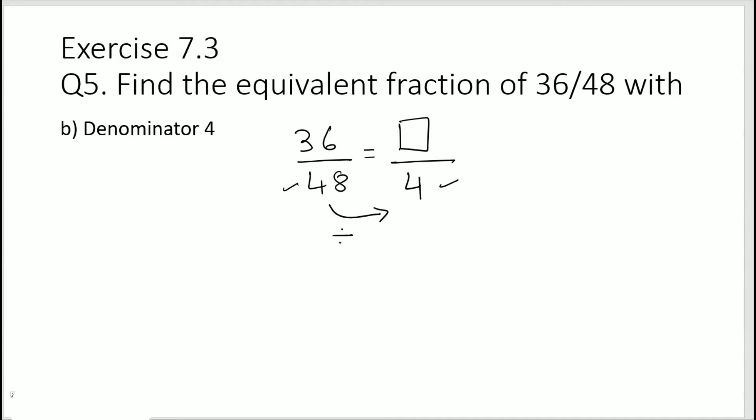Now 48 divided by which number gives me 4? To find out that, we can do 48 divided by 4. So if I do 48 divided by 4, 4 ones are 4, 4 twos are 8.